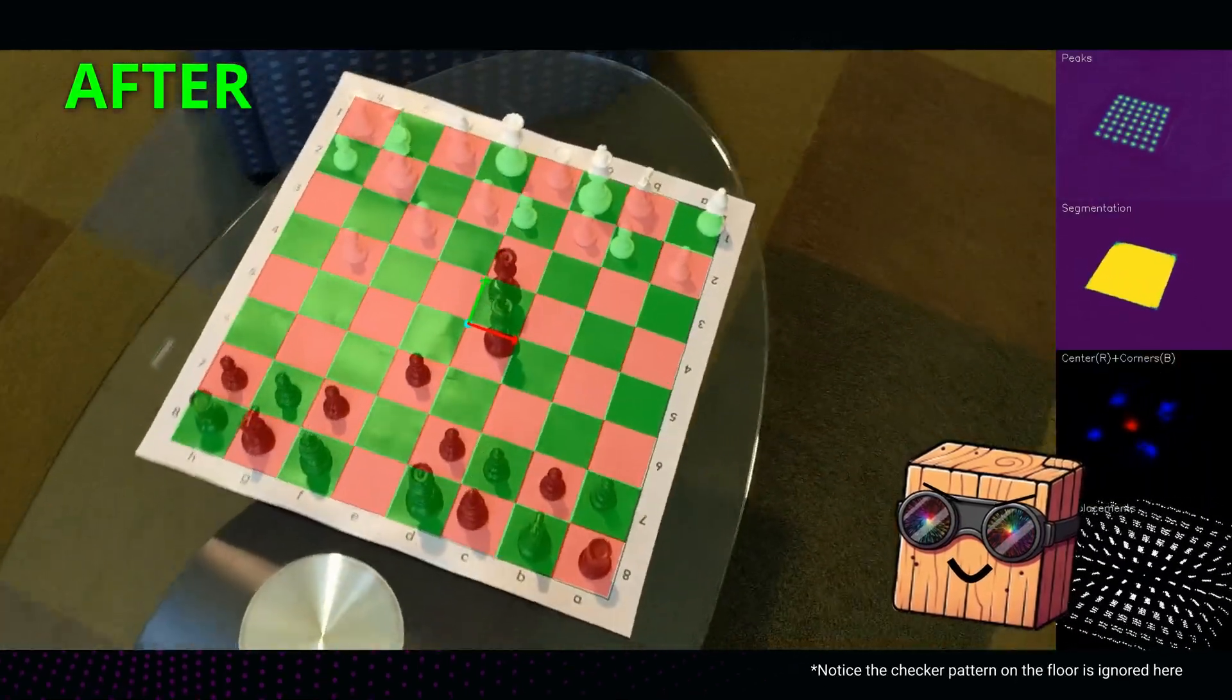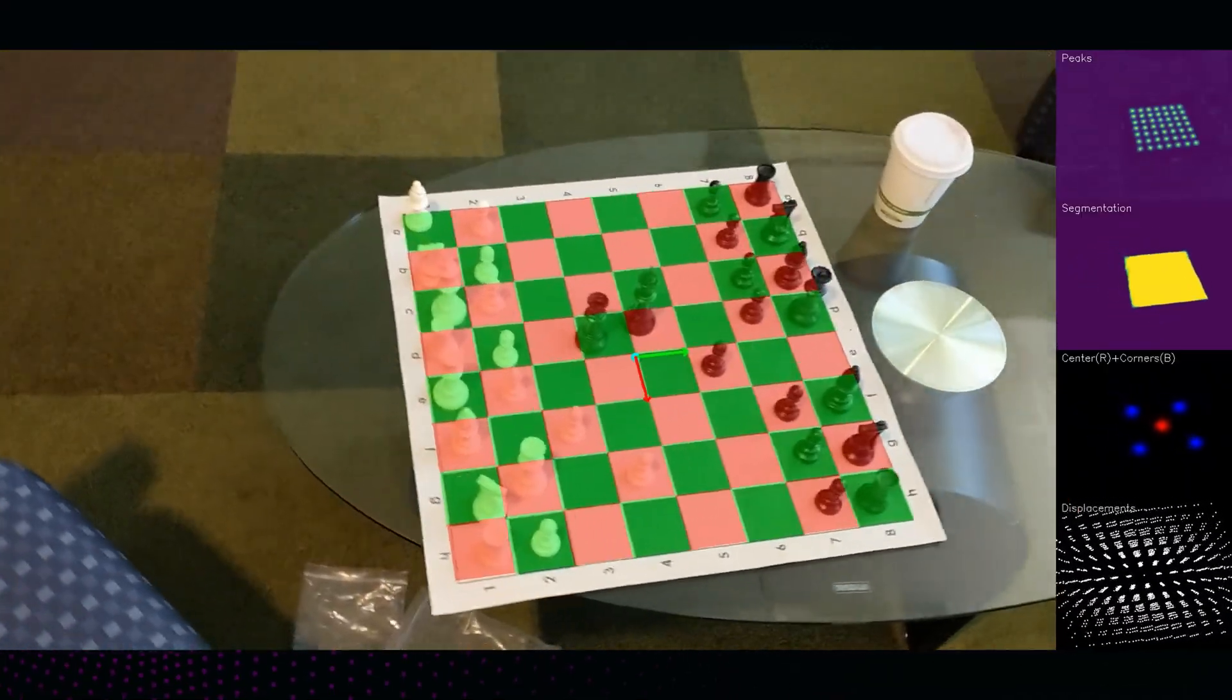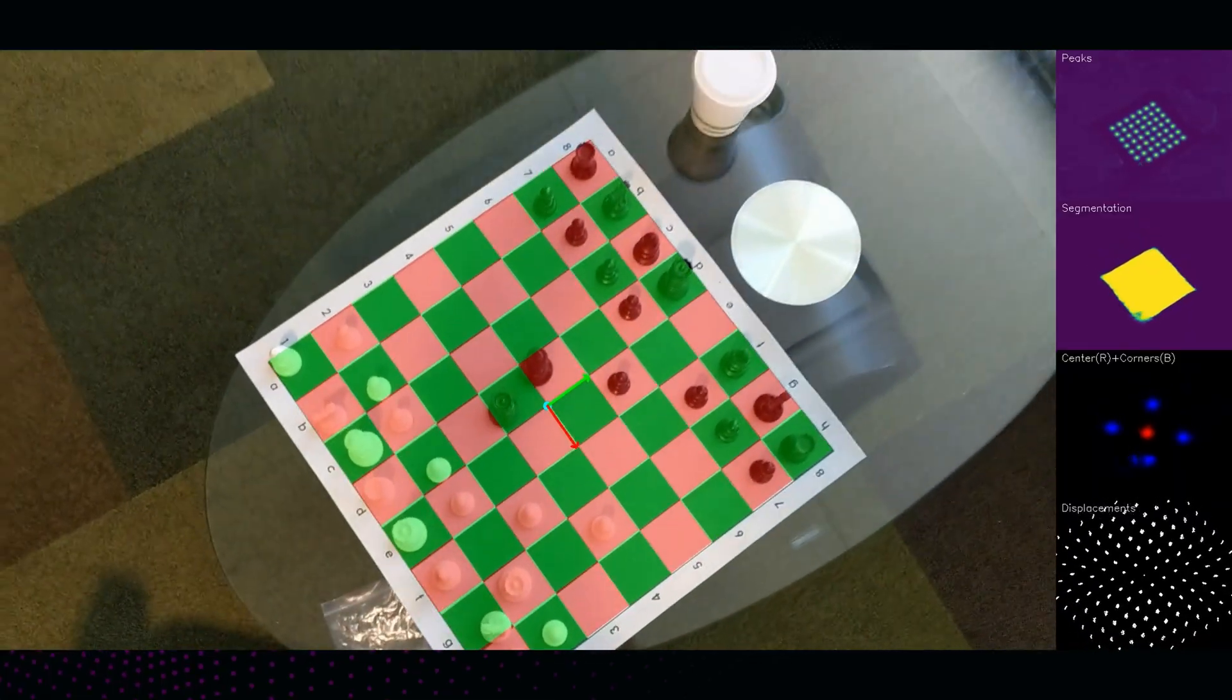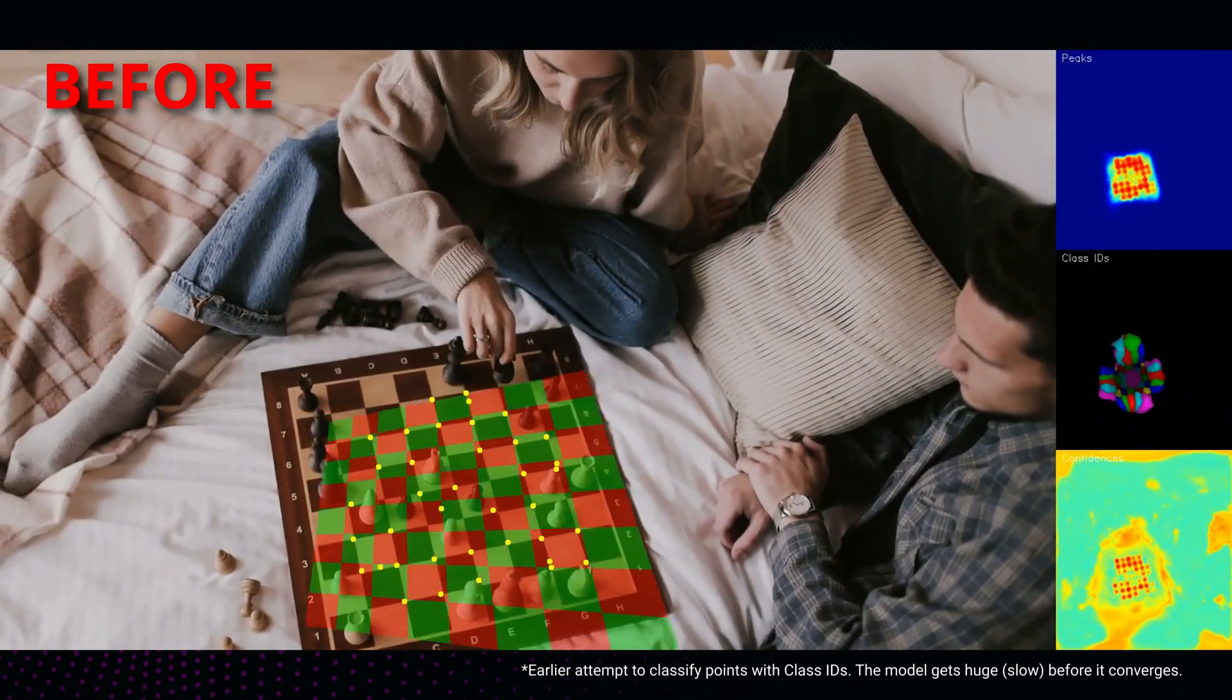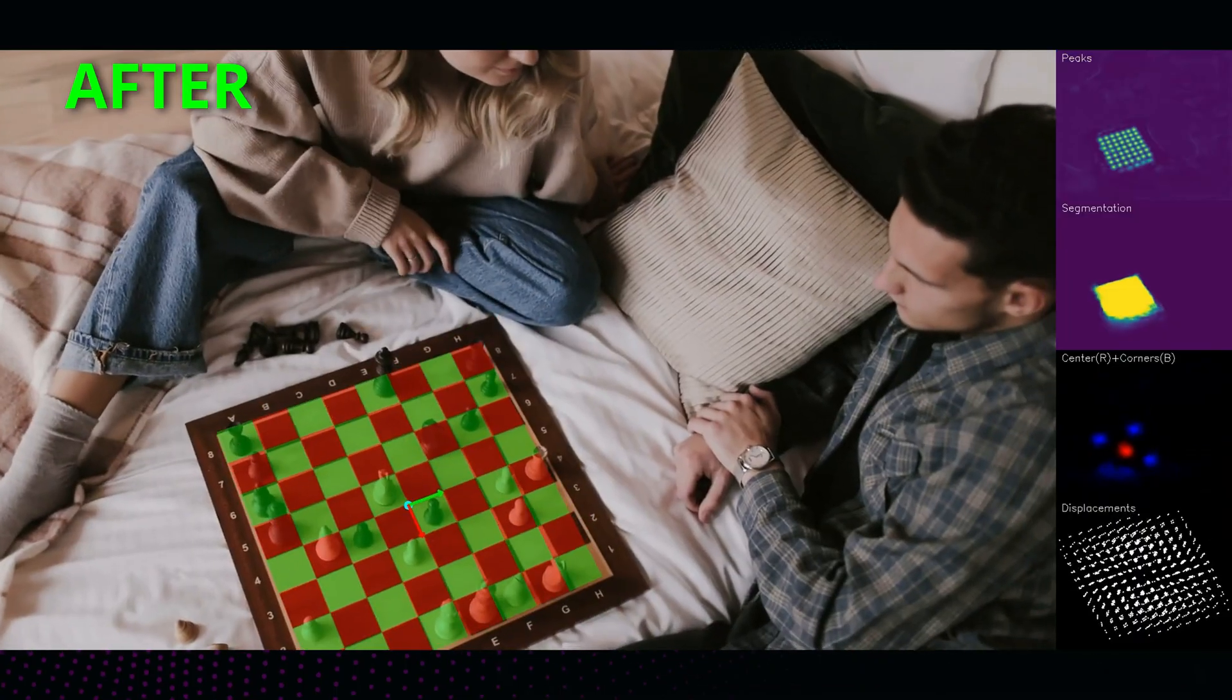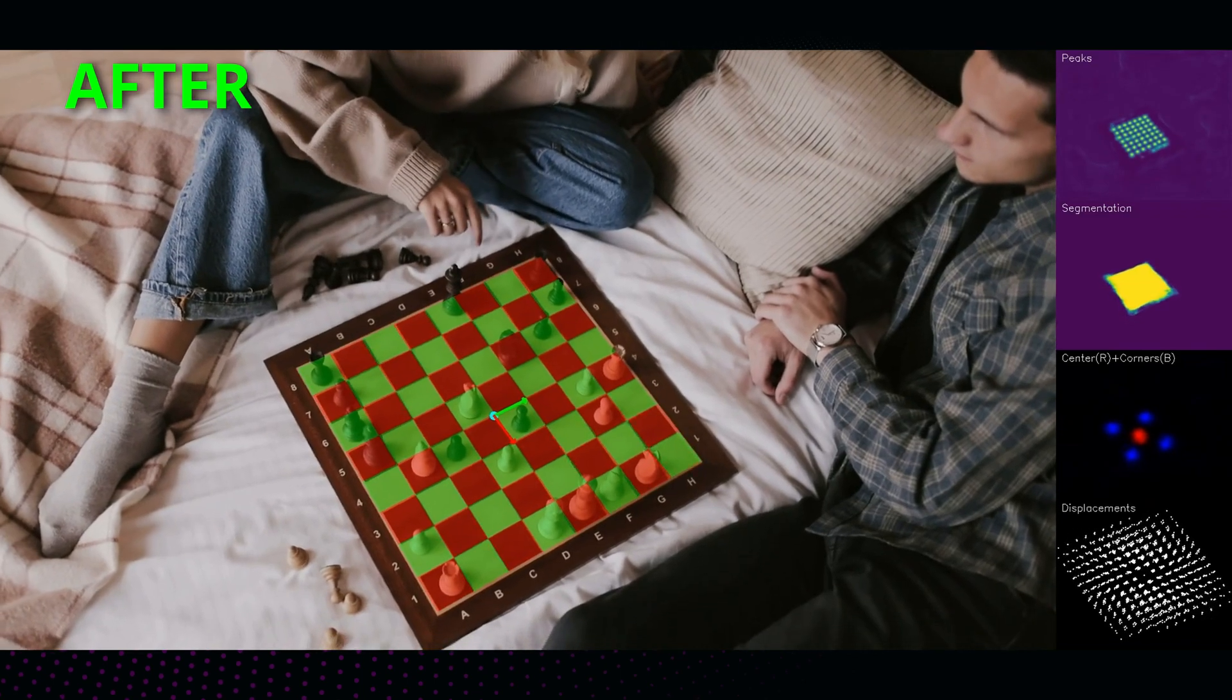By reframing the problem, the curse is now the gift. The very symmetry that confuses the old algorithms is what creates the powerful harmonic signal that makes a new algorithm robust. Not only that, we are now finding these patterns in the very situations where the RANSAC algorithms failed. It's so satisfying to find a solution that feels so geometrically rich and applies to any pattern. The right change in perspective reveals this simple, beautiful structure hidden within the pattern.